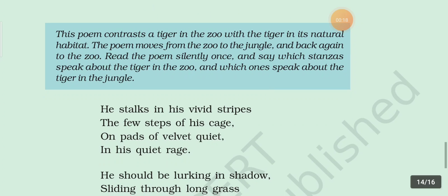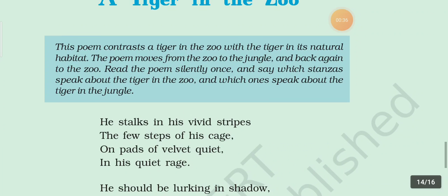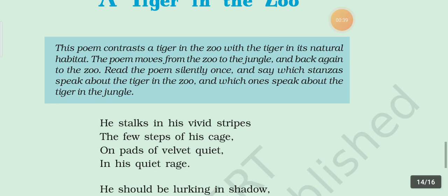First stanza: 'He stalks in his vivid strips, the few steps of his cage, on pads of velvet quiet, in his quiet rage.' In this stanza, 'he' is used for the tiger, so the whole stanza is written in personification. In the first line, 'stalks' and 'strips' have the S sound, so alliteration is used here. Again, 'stalks his strips' — these words have the S sound, so consonance figure of speech is used here.